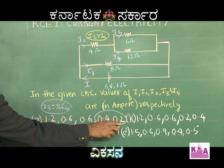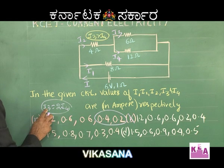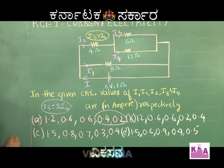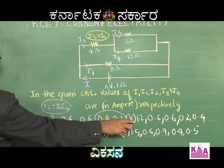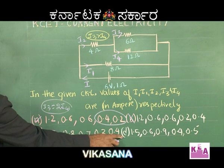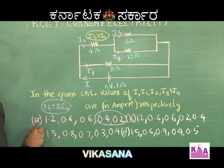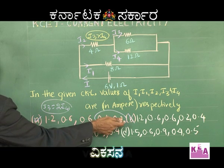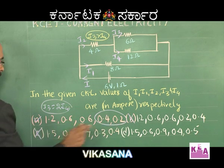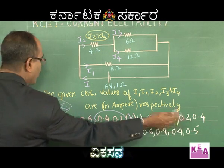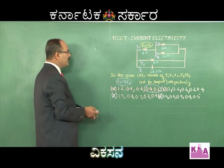So I3 must be 0.4 and I4 must be 0.2, because this is 6 ohm and this is 12 ohm. Option B is just the reverse of that. Coming to option C, we have 0.3 and 0.4 — this is impossible. Option D has 0.4 and 0.5, which also clearly fails since I3 must be double I4. That confirms option A is correct.